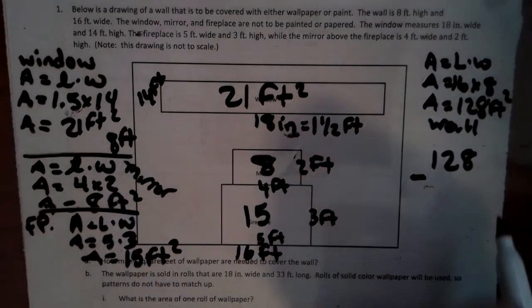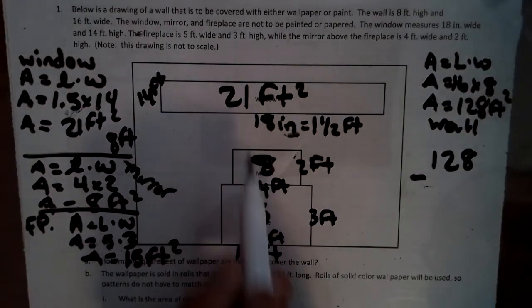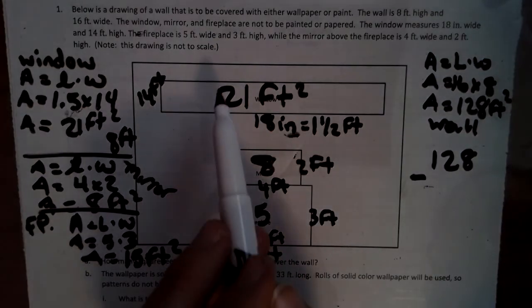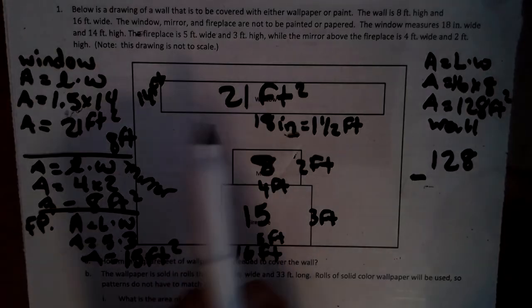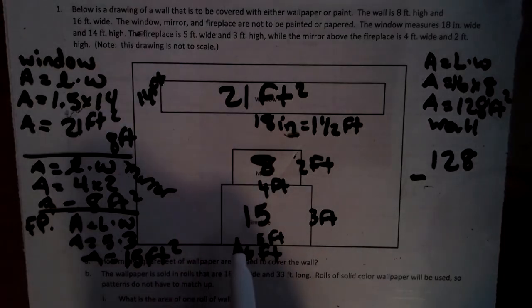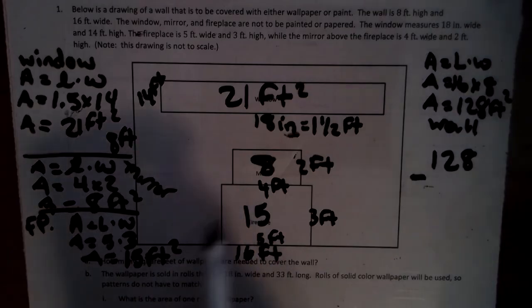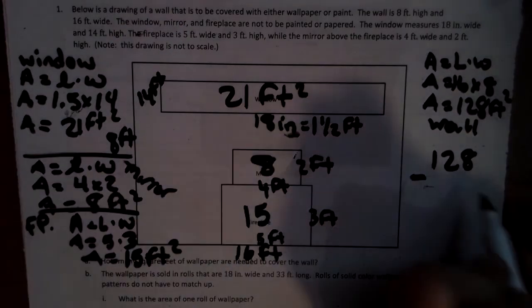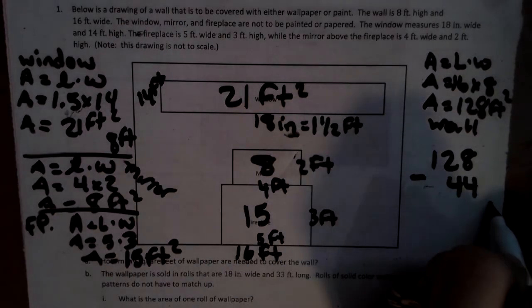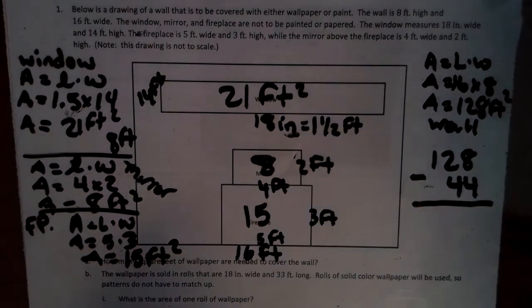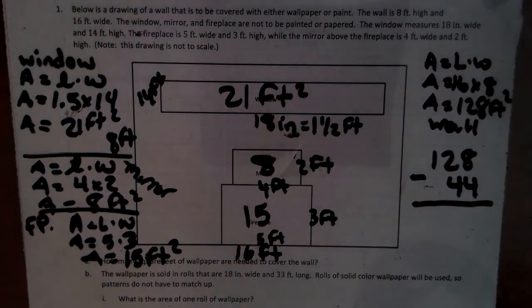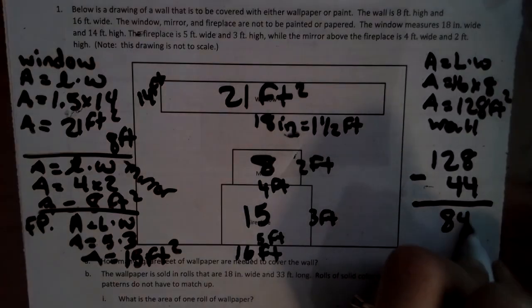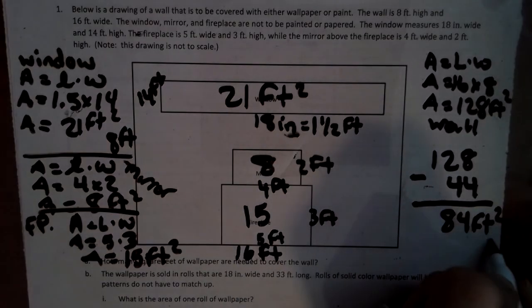So this fireplace is 15. So we have 21, 8, and 15. So we have 21, 29, 39, 40, 41, 42, 43, 44. So when we add that all up, we have 44 feet that we are taking out of that number. So we have 128 minus 44. When we do the math on that, we're going to get 84 feet squared. That's how much we need to wallpaper.